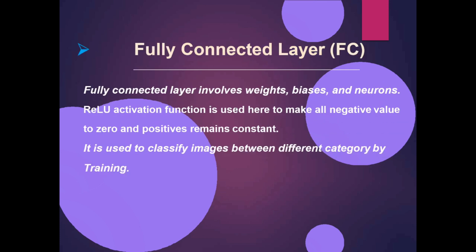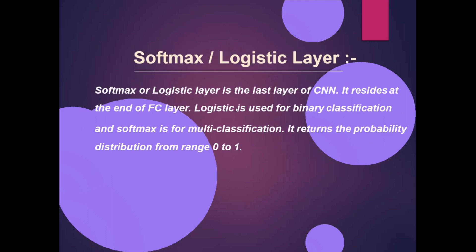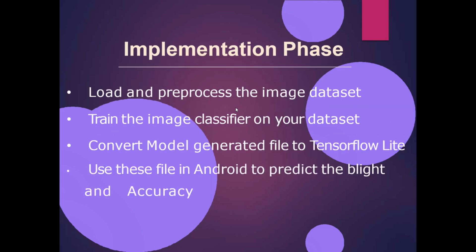The fully connected (FC) layer involves weights, biases, and neurons with ReLU activation. The softmax or logistic layer resides at the end of the FC layer. Logistic is used for binary classification and softmax is used for multi-class classification.